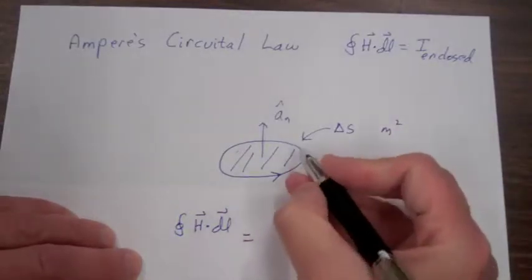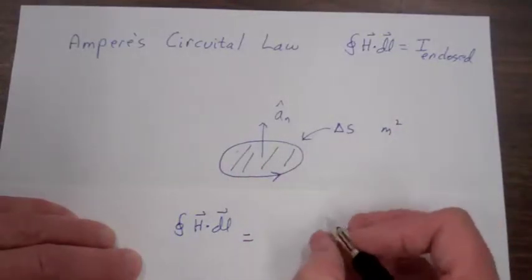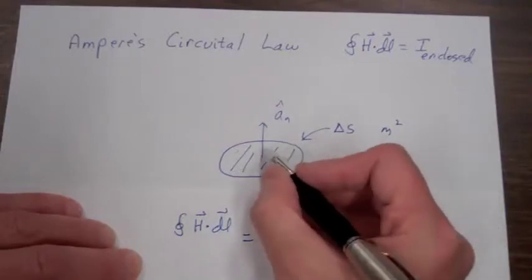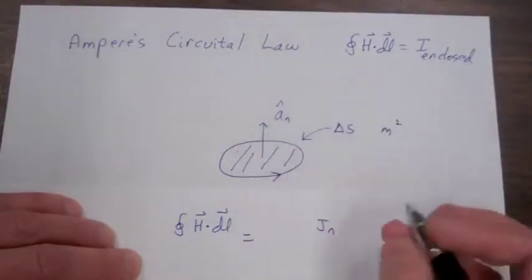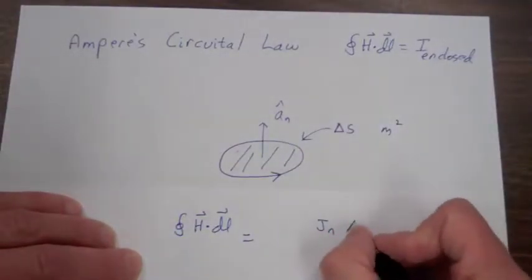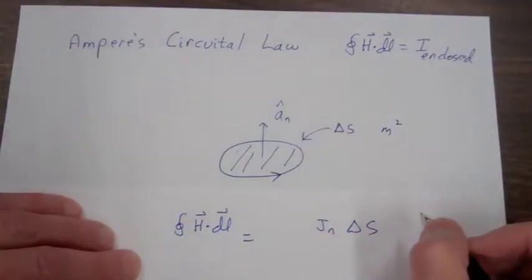So the current enclosed by this path will be equal to the current density in the direction of this unit vector a sub n times the surface area of the path.